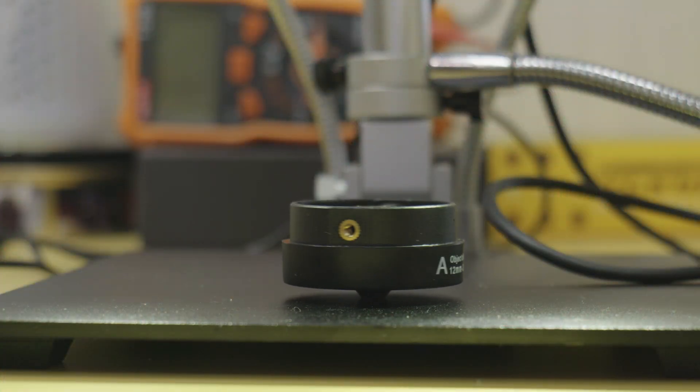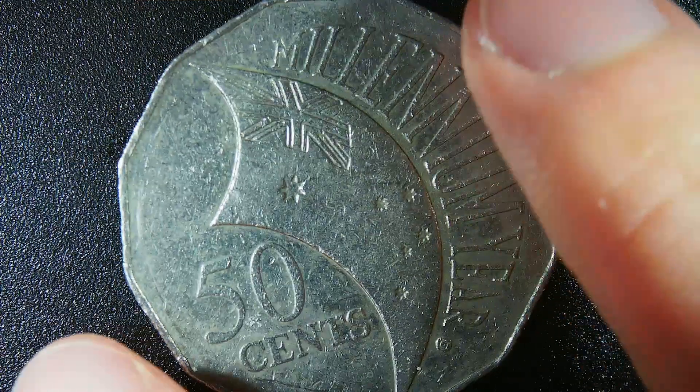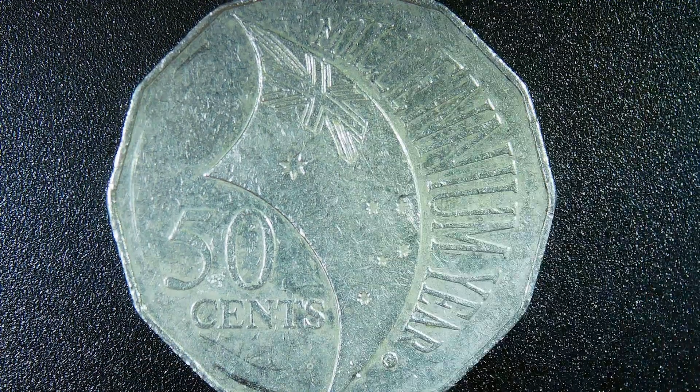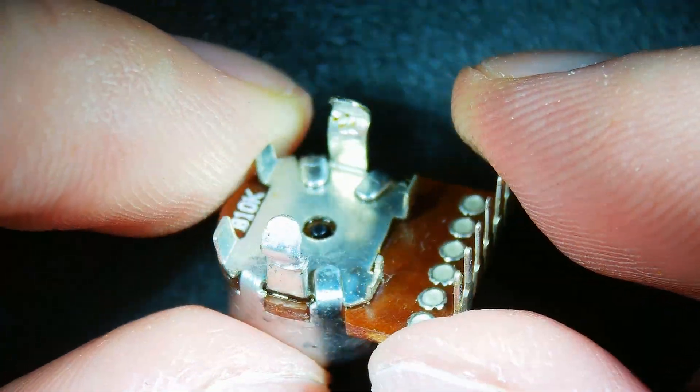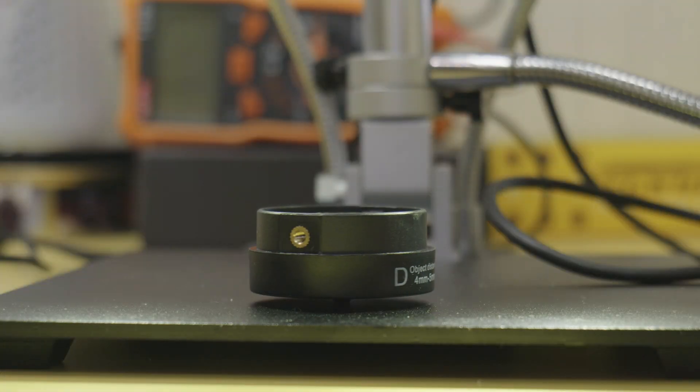Then you have Lens A which is intended as a coin microscope with a working distance of 12-320mm and lastly we have Lens D.